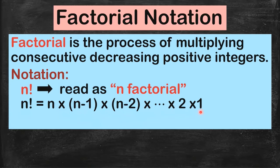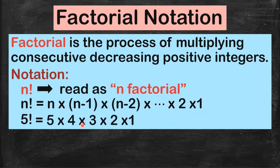Sabi natin, factorial is the process of multiplying consecutive, magkakasunod na decreasing positive integers, hanggang maubos siya down to 1. So if you have 5 factorial, your n is equal to 5. So you have 5 times 4 times 3 times 2 times 1. Ganun lang ang factorial.